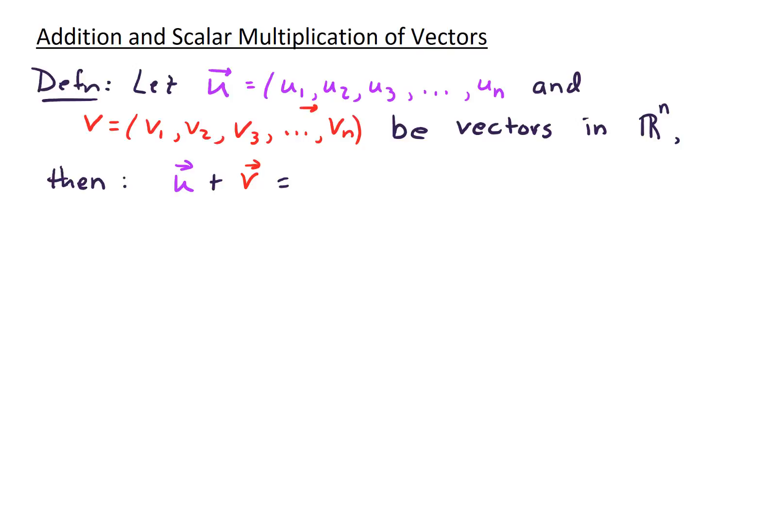To begin, let's start with the definition. Let u be the vector given by u1, u2, u3, all the way up to u sub n. So this is a vector with n components. And let vector v be the vector with n components, v1 up to v sub n. And these are vectors in R^n.